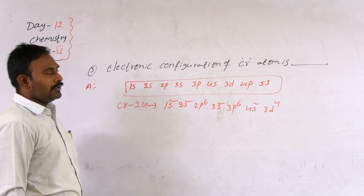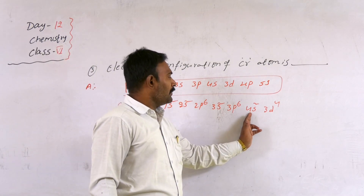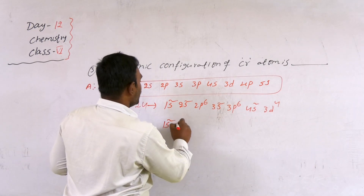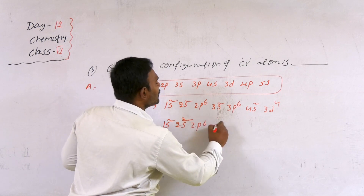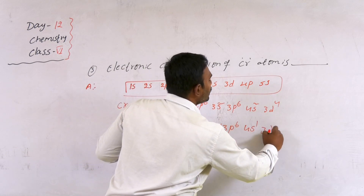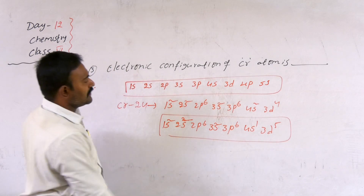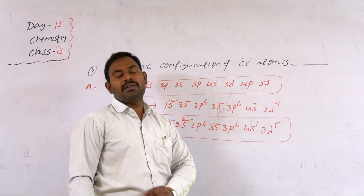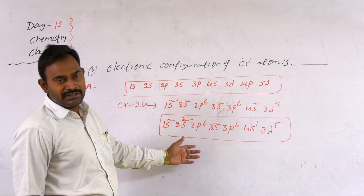To gain extra stability, one electron jumps from the 4s orbital to the 3d orbital. So the correct electronic configuration of chromium becomes 1s2, 2s2, 2p6, 3s2, 3p6, 4s1, 3d5. The reason is that half-filled and fully-filled orbitals are highly stable.